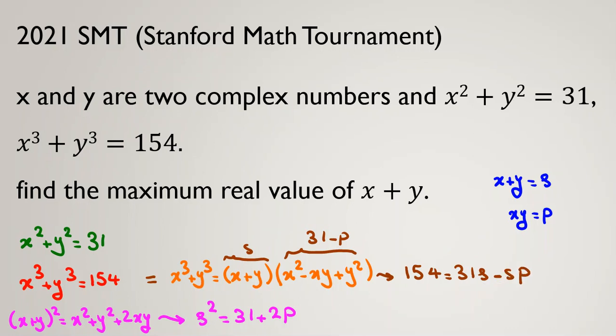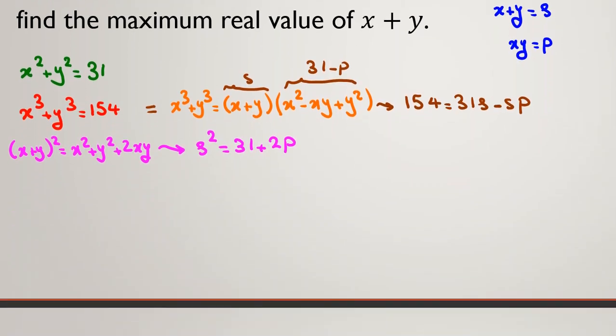Let's see what we have now. We want to find S. The first thing we have, let me call it first identity, second identity. From first one, I can say S squared equal to 31 plus 2P. From second one, I have 154 equal to 31S minus SP.